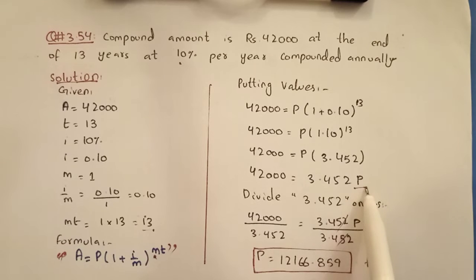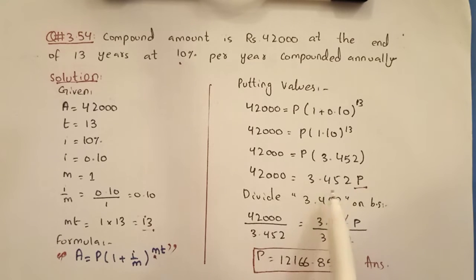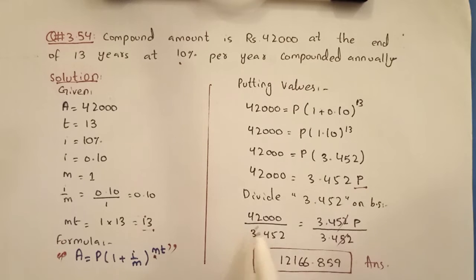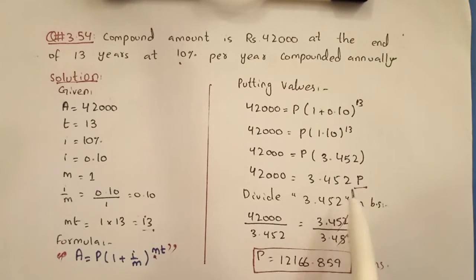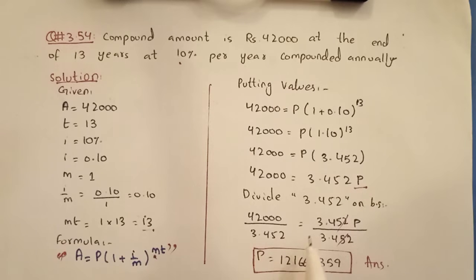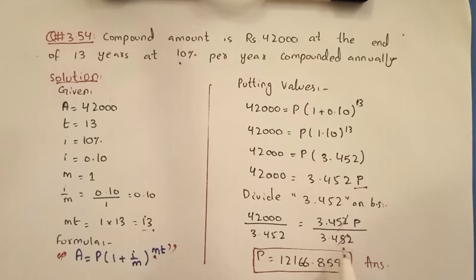So we have 42,000 is equal to 3.452 P. Now to find the present value, we divide both sides by 3.452. So 42,000 divided by 3.452 equals 3.452 P divided by 3.452, and we solve to find P, the present value.